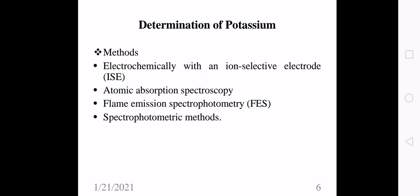Urine specimen for potassium should be collected over a 24-hour period to eliminate the influence of diurnal variation. Methods for potassium determination include ion selective electrode, atomic absorption spectrophotometry, flame emission spectrophotometry, and colorimetric method. Like sodium, the chemical method is no longer used; the method of choice is ion selective electrode.